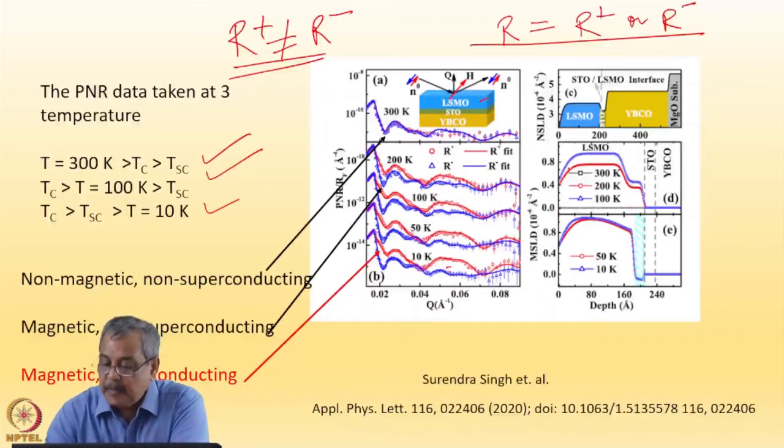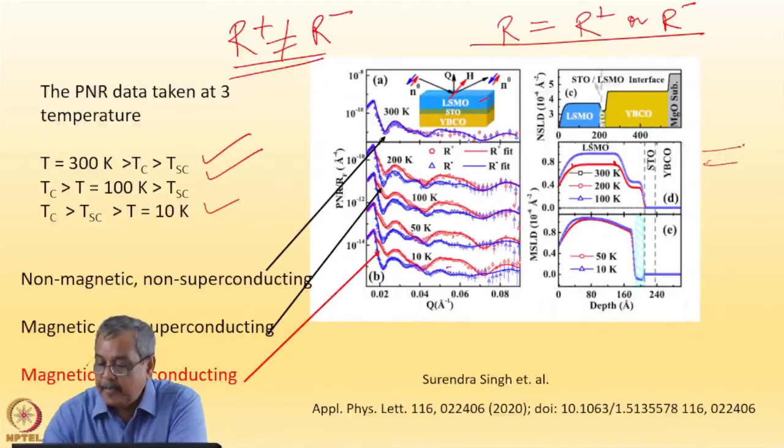At 100 K, we have got a profile which tells me this is the bulk part of the LSMO layer and towards the interfaces, the magnetization reduces. Magnetic moment density reduces and bulk of the thin film LSMO layer, the maximum part of the layer, is ferromagnetic.